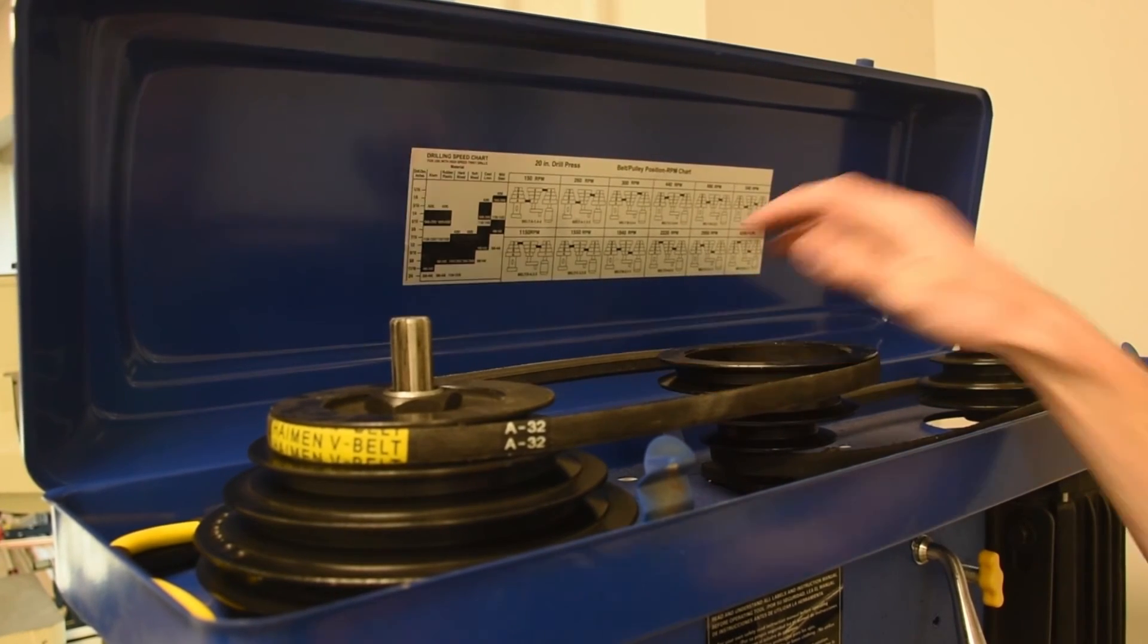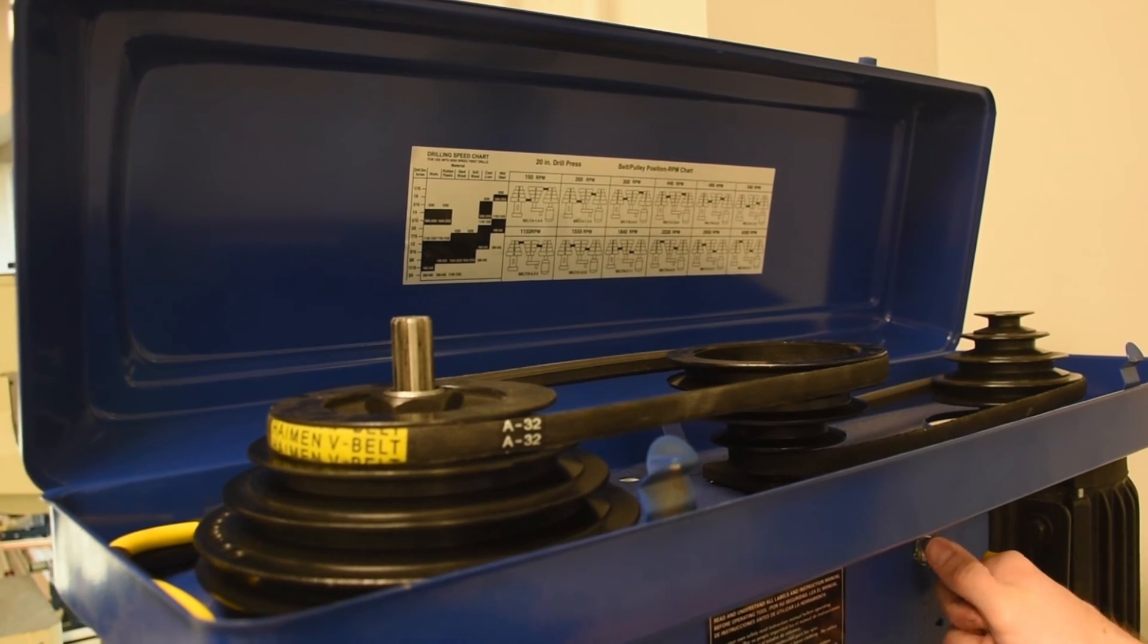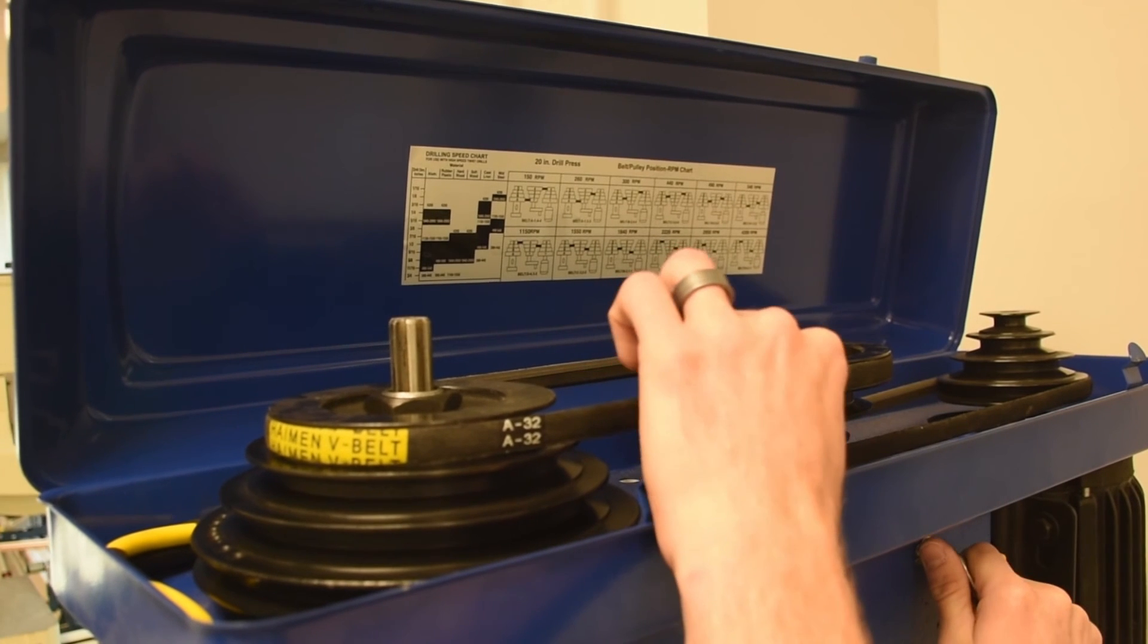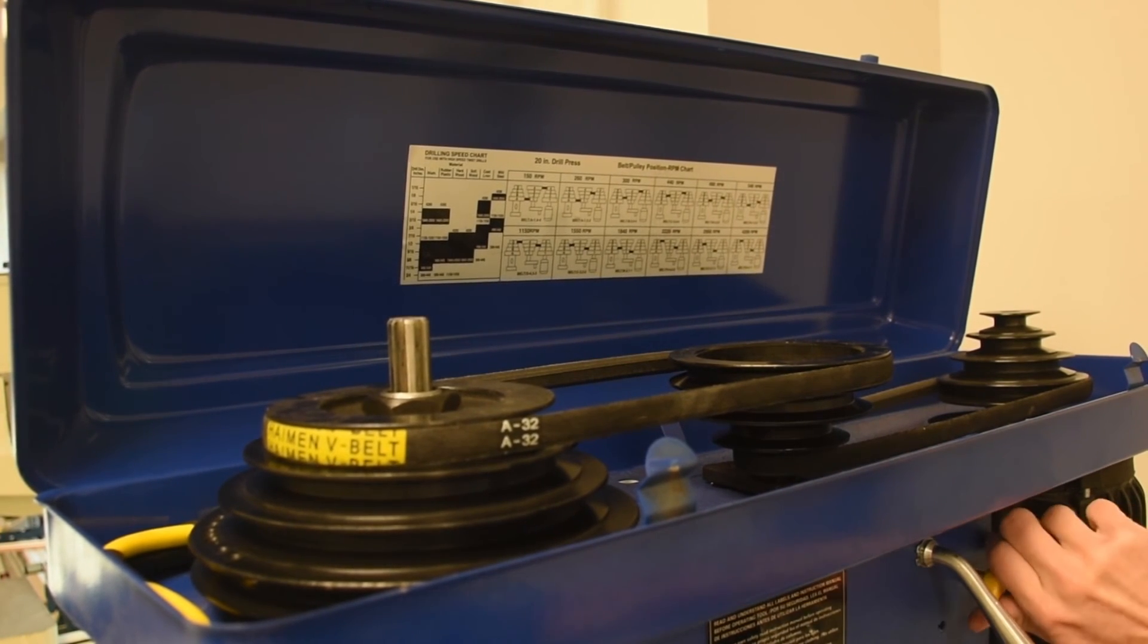Now I've got to re-tension my belt. So I'll take this handle, slide it back as far as it will go until I get good tension. In this case, it's all the way back. And then I'll tighten the thumb screw on both sides.